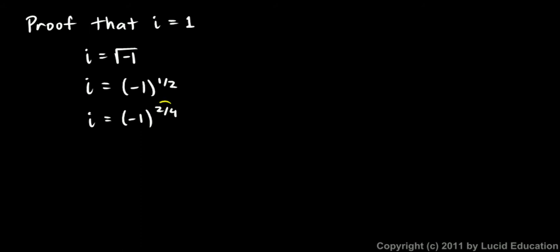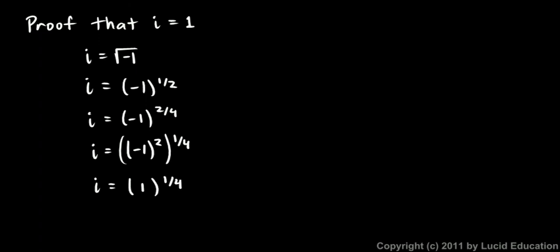A rational exponent — an exponent that is a fraction — involves a numerator that is a power and a denominator that is a root. So this is a squared and a fourth root. I can break this up into two steps: i is negative 1 squared, and then all that to the power of 1/4. Negative 1 squared is negative 1 times negative 1, which is positive 1. So this is just 1 to the 1/4, and 1 to the 1/4 is just 1.